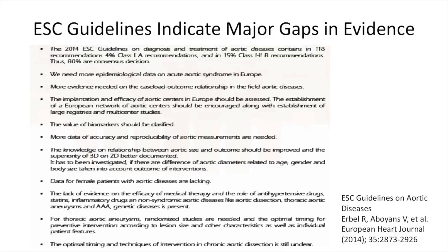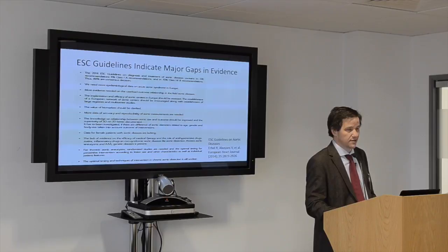Here we see an example of how to find major gaps. These are the recent guidelines from the ESC on aortic disease. They tell us 80% of the recommendations are only consensus decisions, and they indicate a lot of major gaps — like more epidemiologic data needed, the value of biomarkers should be clarified, we need more data on accuracy and reproducibility of aortic measurements, and we need more data about female patients with aortic disease. So the guidelines themselves identify these gaps.